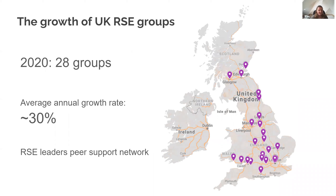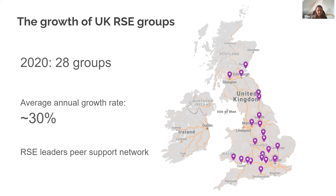The broader RSE context continues to see extremely rapid progress, with very fast growth of RSE groups in the UK — a really major success of the RSE movement. There are 28 groups as of the last count earlier this year, and usually every time we present this slide there are a few more wanting to be added afterwards. We found about a 30% annual growth rate across the board, which is pretty phenomenal. The society supports the RSE leaders network where there's peer support for people setting up or running groups or who would like to start one at their university.